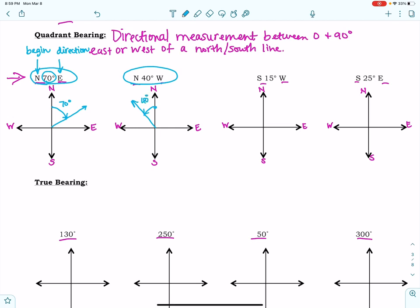For these quadrant bearings, we have South 15 degrees West. I'm going to put my pencil on the vertical line below the horizontal line, and this time I'm going to move 15 degrees in the direction West.